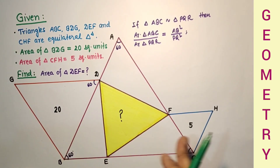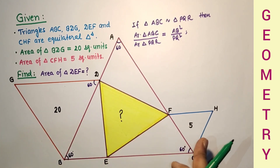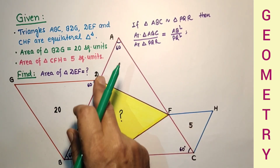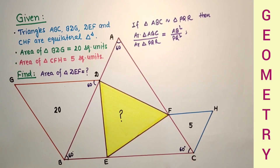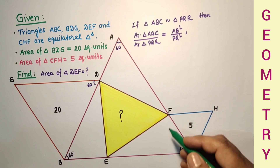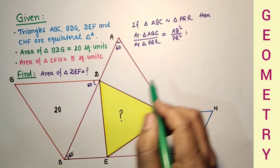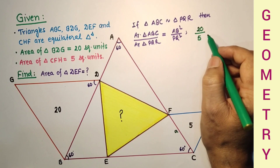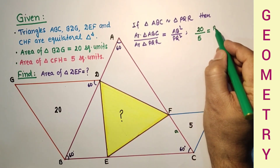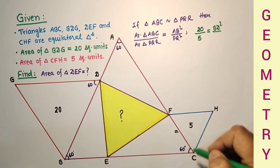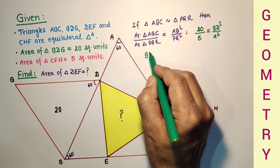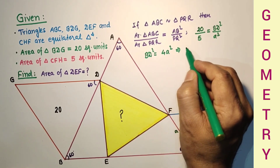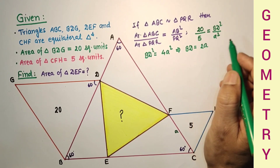I am taking these 2 triangles — they are similar because all equilateral triangles are similar. Area of BDG upon area of CFH equals BD² / FC². So 20 over 5 equals BD² / A², giving BD² = 4A², therefore BD = 2A.